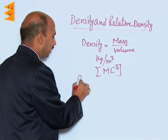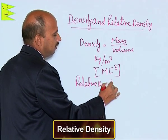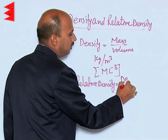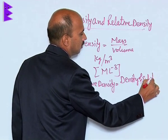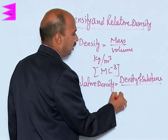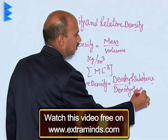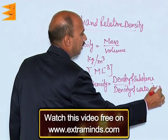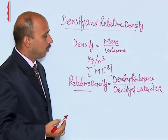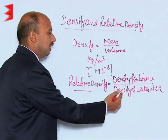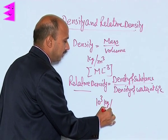There is another quantity also that is called relative density. Relative density is equal to density of substance divided by density of water at 4 degrees Celsius. The density of water at 4 degrees Celsius is 10 raised to power 3 kg per meter cube.